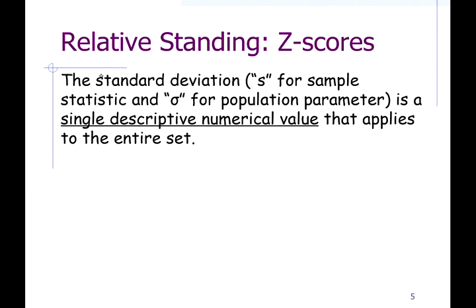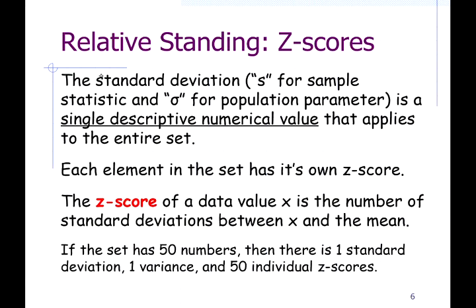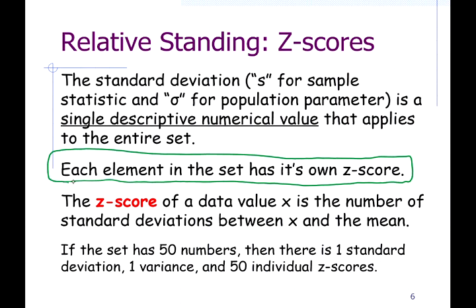The standard deviation is one number per set — a set of 100 numbers has one standard deviation, one variance, one mean, one median. Rather than characterizing the set as a whole, a z-score characterizes an individual value. Each x value, each element in the set, has its own z-score. If you have a set with 50 numbers, it's going to have 50 z-scores.